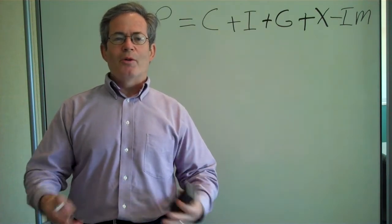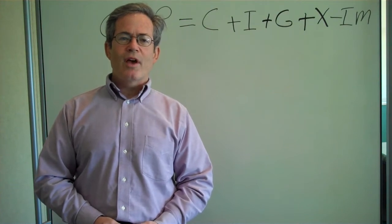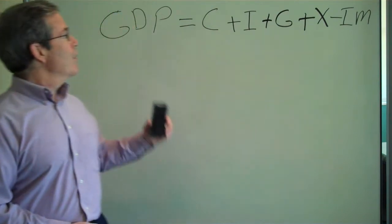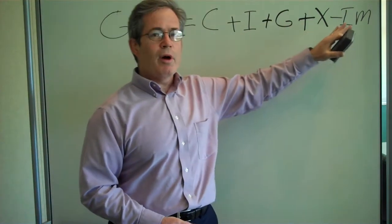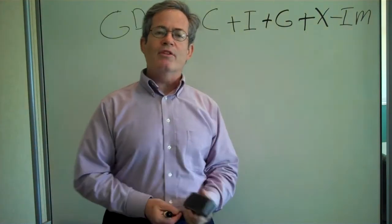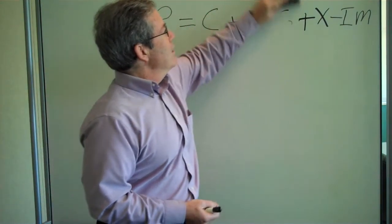Now we need to build up this model little by little, and so Keynes started first with a discussion of consumption. GDP equals consumption plus investment plus government expenditure plus exports minus imports, but now we're going to simplify this and just talk about consumption.